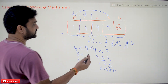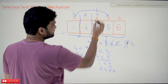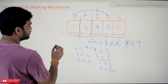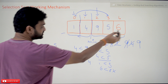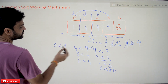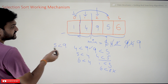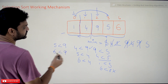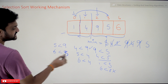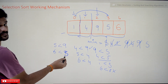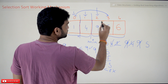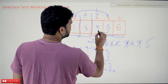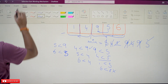In the next iteration, the element 9 is considered as the minimum element. We compare 5 with 9 — is 5 less than 9? Yes, so the new minimum element is 5. Is 6 less than 5? No, it is not true — 6 is larger. So among all the unsorted elements, the minimum element is 5, and these two elements, 9 and 5, will get swapped.